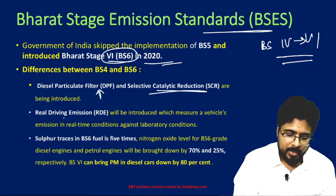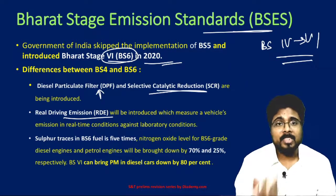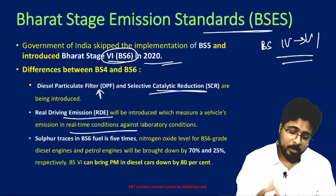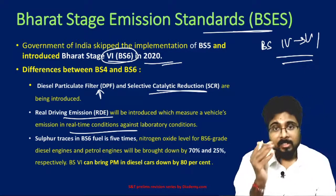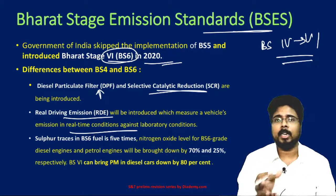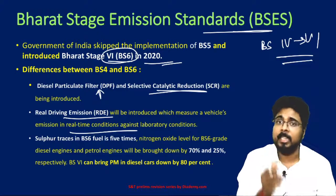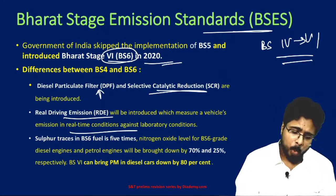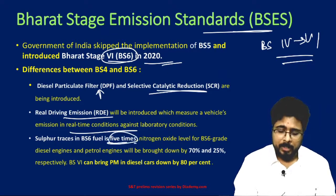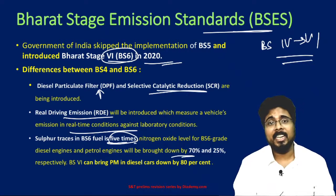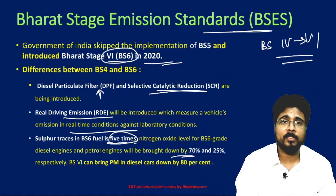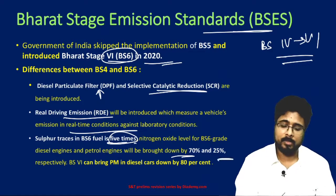Next is real drive emission, which will be introduced and measures the vehicle's emission in real-time conditions. Also, the sulfur and nitrogen concentration in the emissions will reduce drastically in BS 6 engines. The sulfur traces will be reduced up to 5 times. There will be up to 70% reduction in nitrogen levels in BS 6 diesel engines, and 25% reduction in petrol engines.